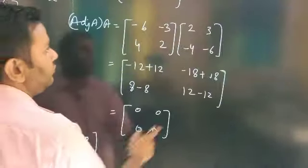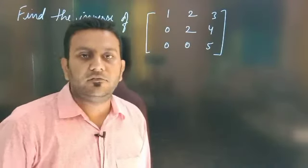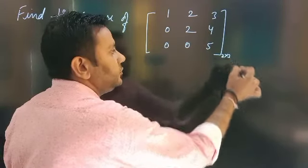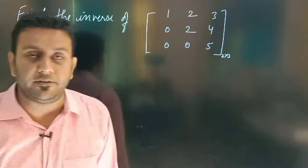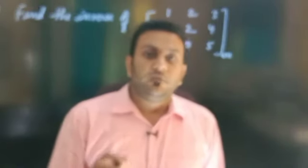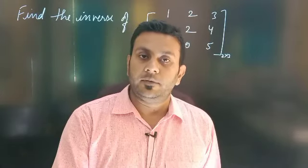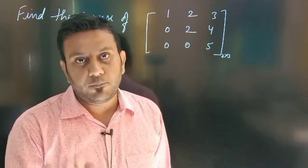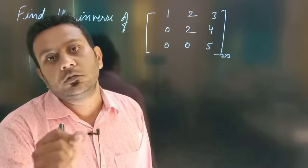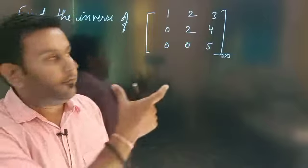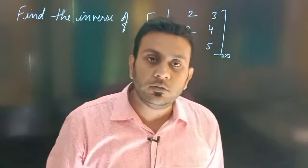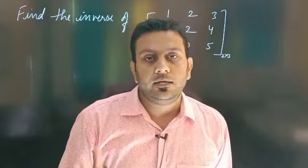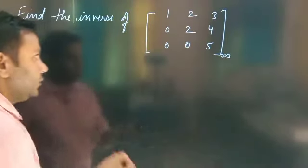Next question, question number 7: find the inverse of this matrix. The matrix order is 3×3, so third order square matrix. But first we need to confirm — is this matrix singular or non-singular? Inverse exists only for non-singular matrix, that is, the value of its determinant must never be equal to 0.